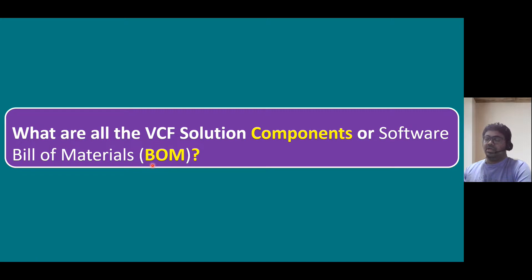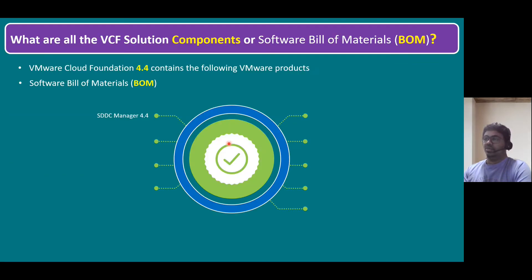Normally, when we are having conversations with customers for any new project implementation, we have to submit two types of BOMs. One is the hardware BOM — it consists of all hardware peripherals information, like server information (for example, HPE DL380), network information like Aruba switches, and storage components like HPE Nimble storage, 3PAR, or other storage components. That is the hardware Bill of Materials. When it comes to the software bill of materials, whatever solution components are included, all the software comes under this bill of materials.